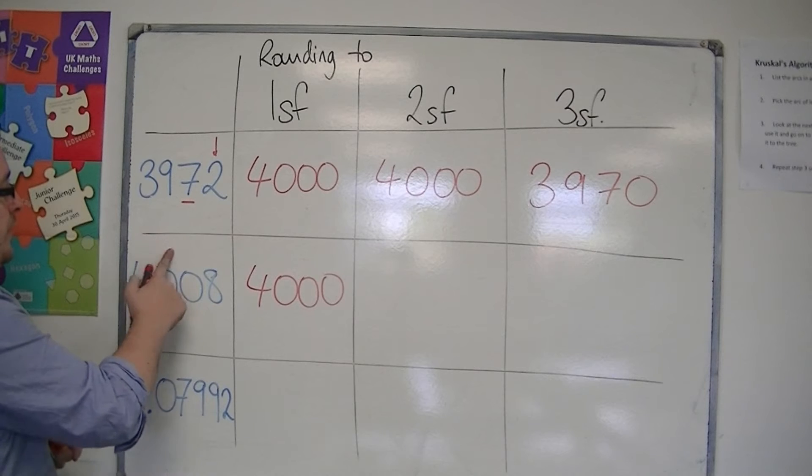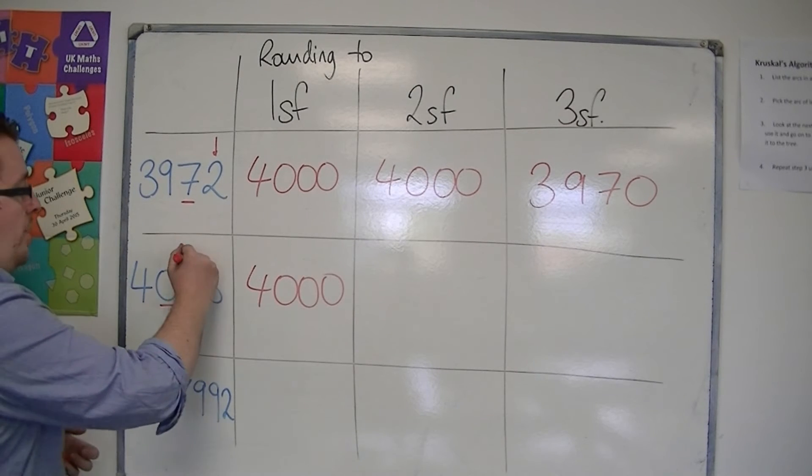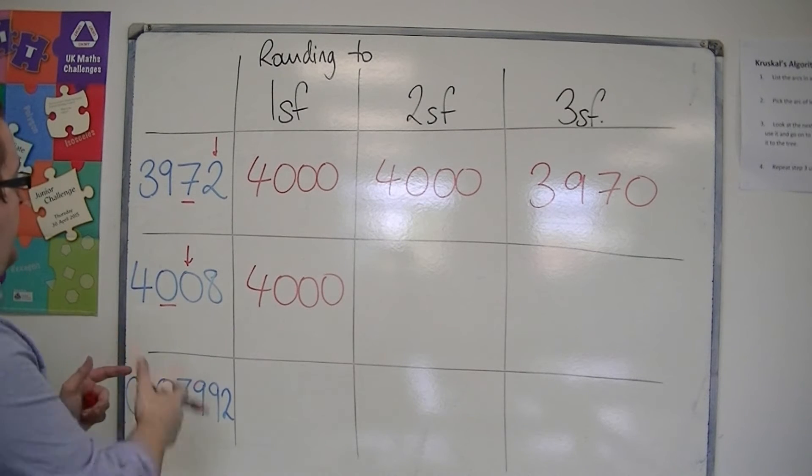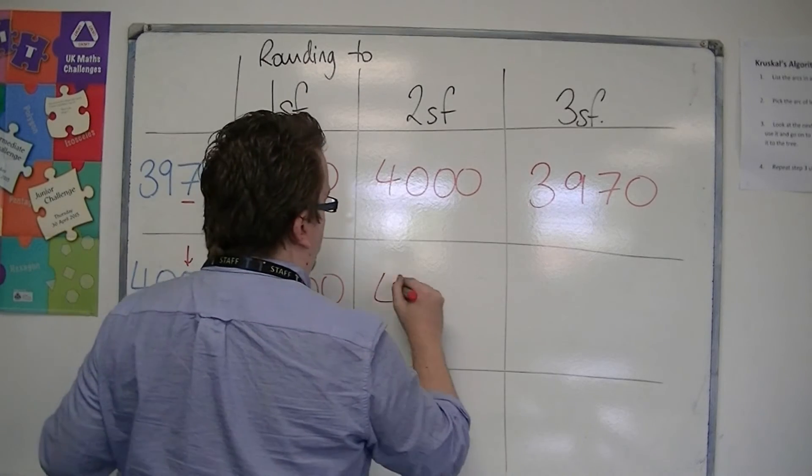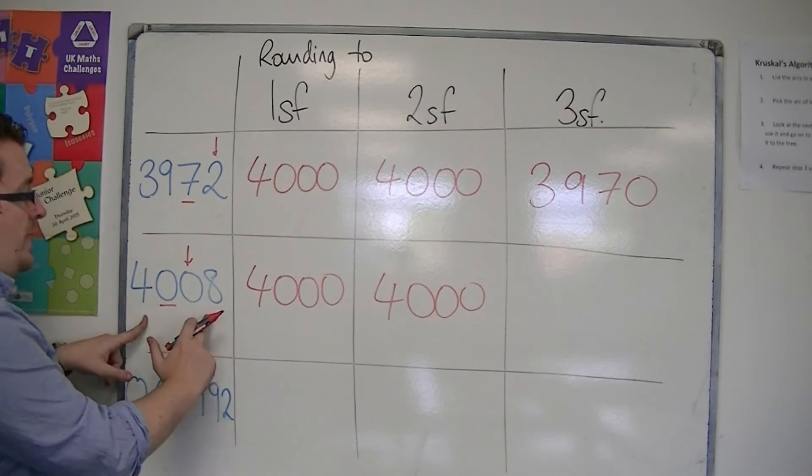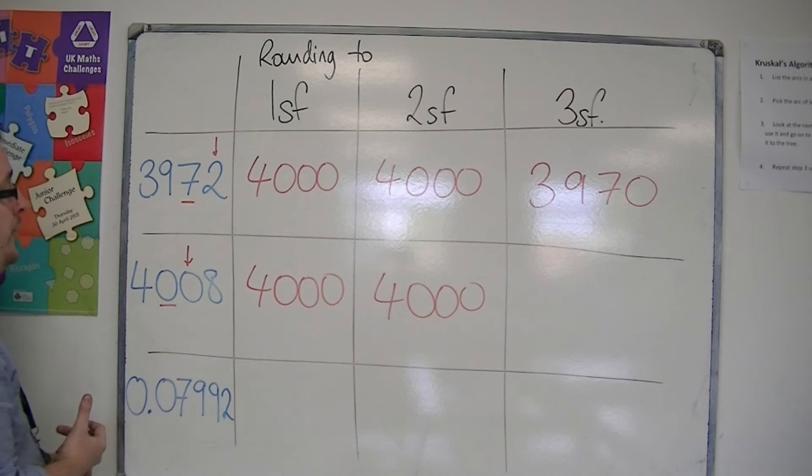For two significant figures, I look at the second significant figure column, one to the right. That's less than 5, so it would round to 4,000 again. In this case, our choices would have been 4,000 or 4,100, and it is clearly closer to 4,000.